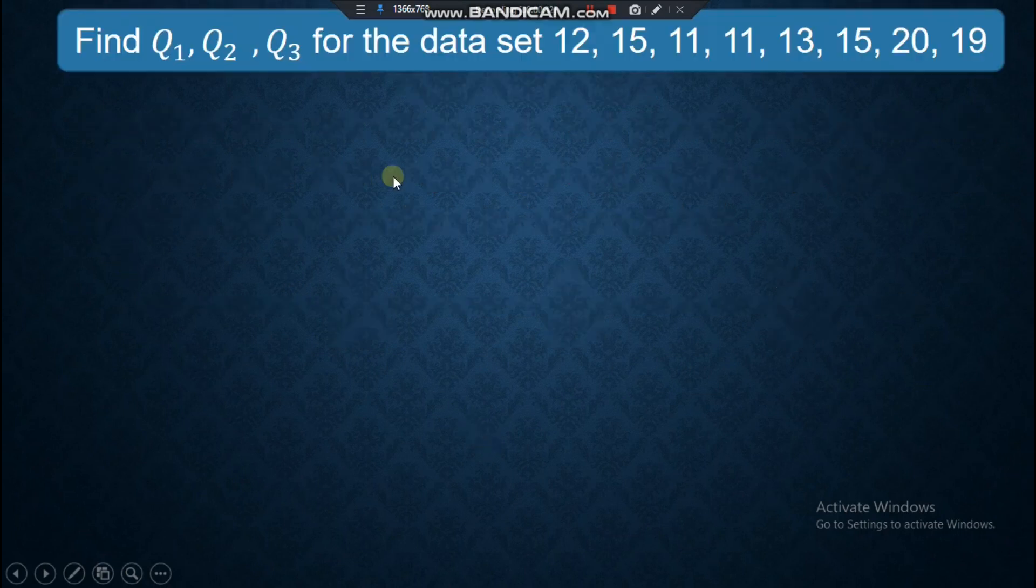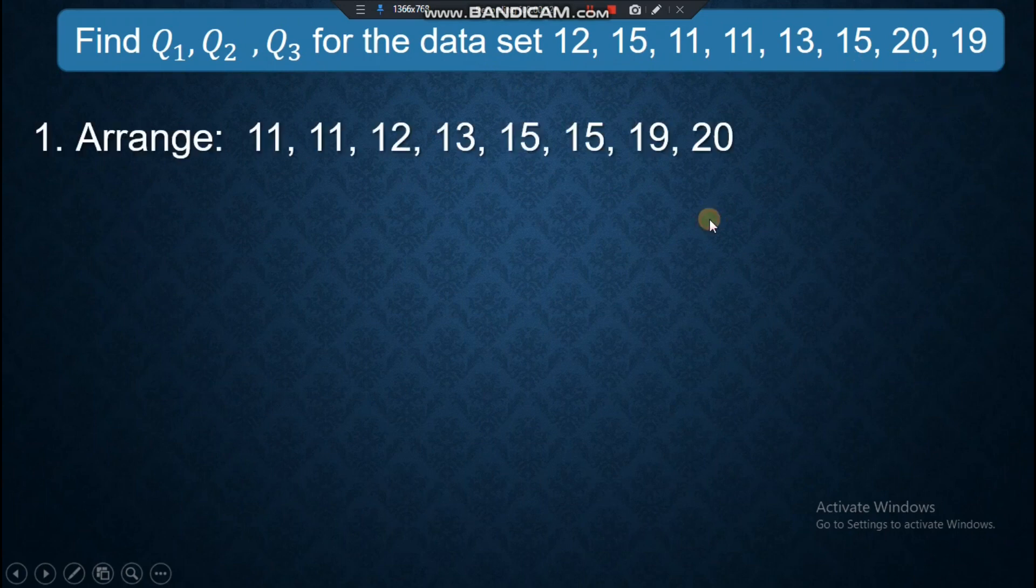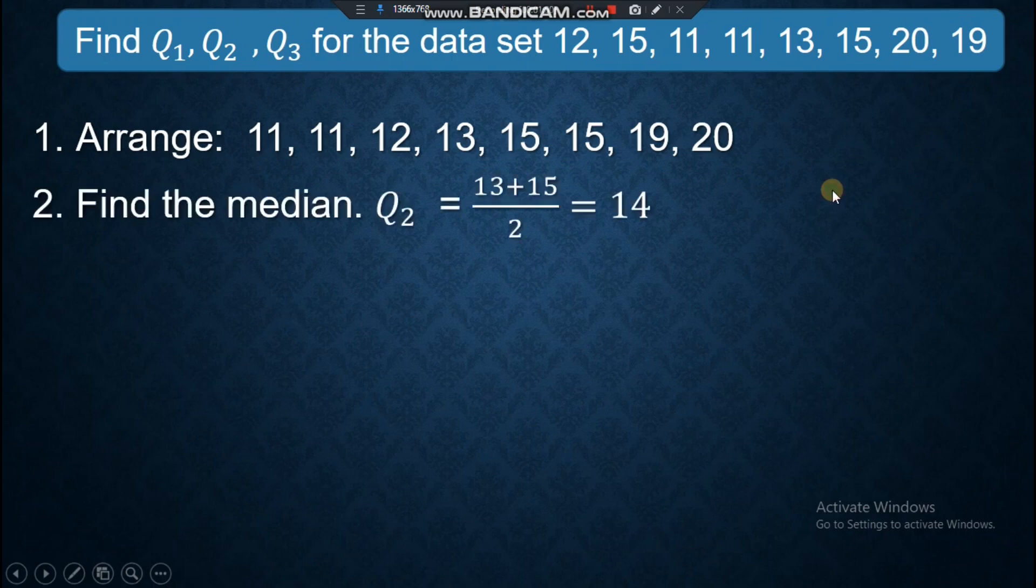Let's have this problem. Find Q1, Q2, Q3 for the data set 12, 15, 11, 11, 13, 15, 20, and 19. First is you arrange the data. Same thing, you arrange the data in ascending order.